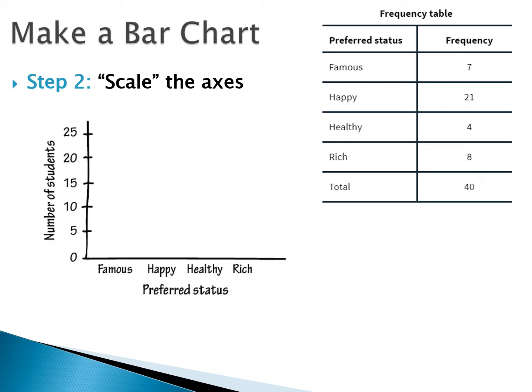When I look at this frequency table on the right, we want to see what the largest value is. We can see that's 21. We're not going to put the total on there because that doesn't give any information — we're just looking at the four options the students could take. So we want to make our scale large enough to fit that 21, and here we went up to 25.